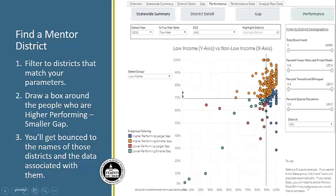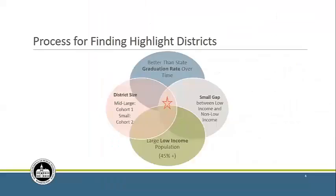I want to encourage you to take a look at these analytics if you haven't already. They really do put equity in perspective, and they're a great tool to help you find your focus for targeted supports. At OSPI, we use this data from the equity analytics to help us find highlight districts. Chuck and Suzanne come from Sunnyside, one of our first districts identified.